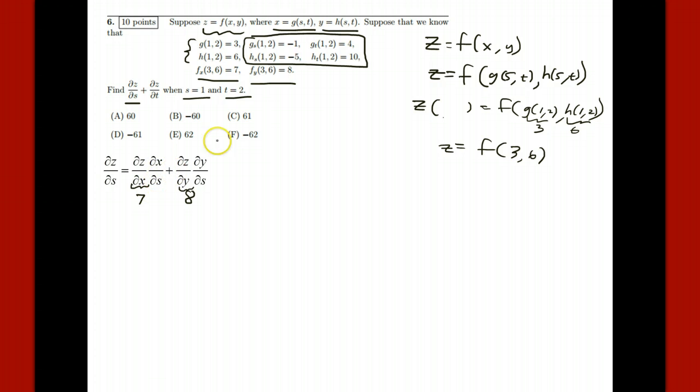Okay. This guy, x with respect to s, because x is g, that's this negative 1. We multiply there. And then, y with respect to s, since y is h, we get a negative 5. And so we're going to get a negative 7 and a negative 40. We're going to get a negative 47 there.